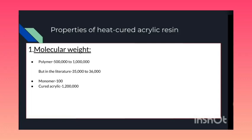Properties of heat cured acrylic resin: Number one, molecular weight. The molecular weight of polymer is from 5 lakh to 1 million as supplied by manufacturers, but in the literature it is said to be from 35,000 to 36,000. The molecular weight of monomer is 100. In cured acrylic, the molecular weight of the cured polymer is up to 1.2 million. A greater molecular weight of the cured polymer in a thick denture base usually imparts good strength.